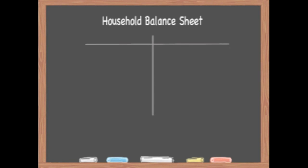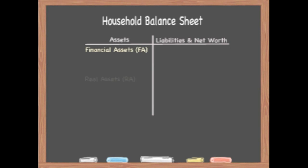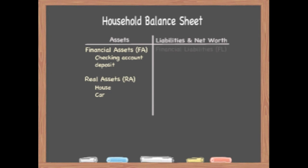It consists of two columns: one for assets and one for liabilities and net worth. There are two types of assets: real assets and financial assets. Real assets are physical things such as your car or house. Financial assets are things like a checking account deposit — a claim on another economic unit, an IOU that you hold on someone else. Conversely, financial liabilities are your debts to another economic unit, such as a car loan or mortgage.